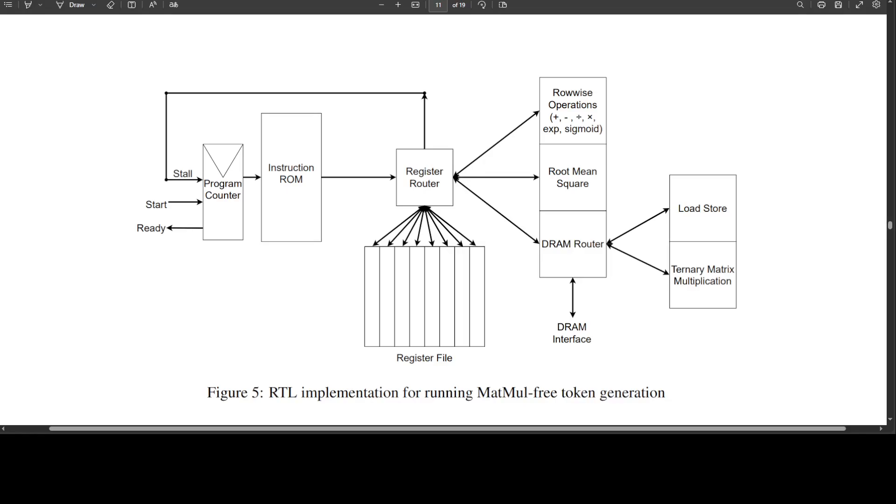There are four functional units in this design: row-wise operation, root mean square, load store, and ternary matrix multiplication. They each allow for simple out-of-order execution. They also wrote a custom assembler for their custom instruction set, which was used to convert assembly files into an instruction ROM.